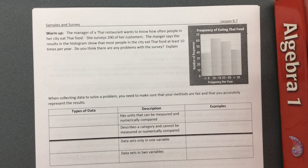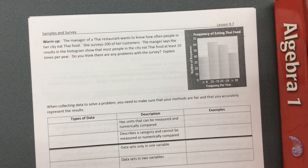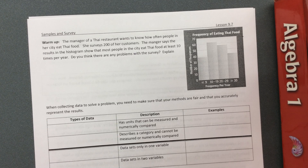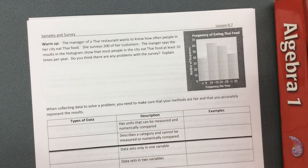I want to warm up with this. Let's say this histogram shows that a manager of a Thai restaurant wants to know how often people in her city eat Thai food. What she does is she surveys 200 of her customers. The manager says the results in the histogram show that most people in the city eat Thai food at least 10 times per year. Do you think there are any problems with the survey?